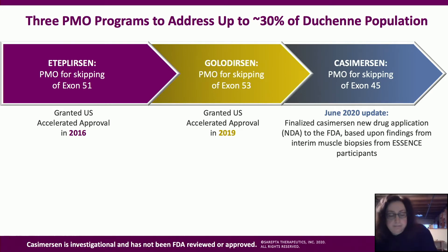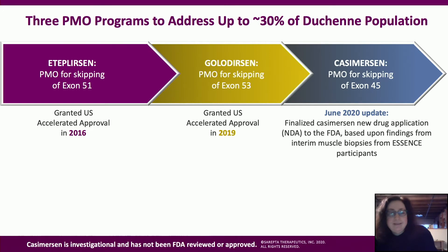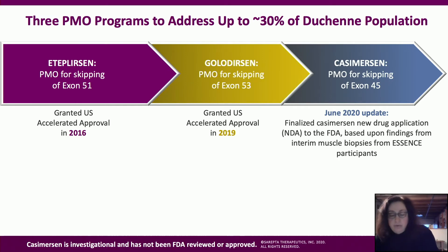PMO is our core exon skipping platform designed to precisely target an exon and restore protein production. Eteplirsen was designed for skipping exon 51 and has been available since September 2016 in the U.S. Golodirsen was designed to skip exon 53 and has been available in the U.S. since late last year. Casimersen has been designed to skip exon 45, and I'm happy to announce that the new drug application for casimersen was fully submitted to the FDA on June 26.